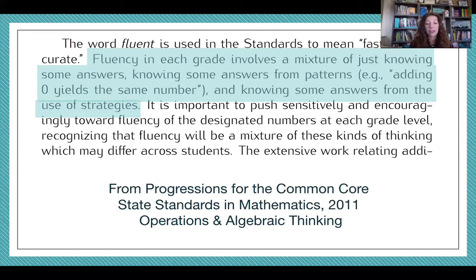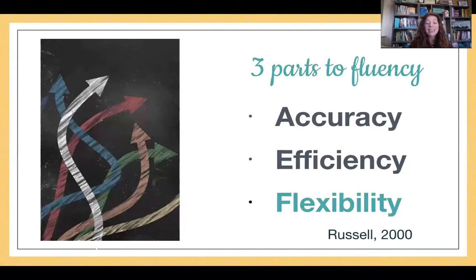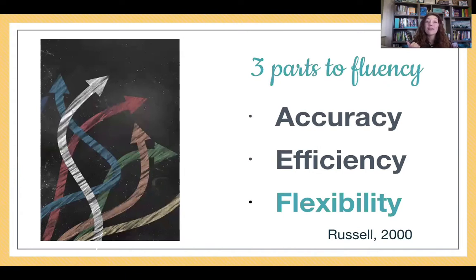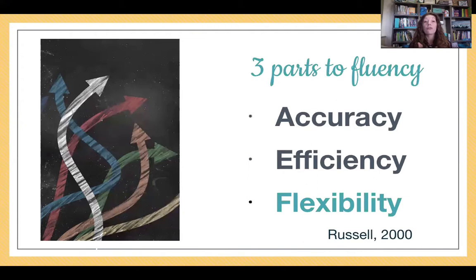Kids need strategies. Another definition I've used a lot comes from three pieces put out by Susan Jo Russell in an article in 2000. She said there are really three parts to determining fluency: kids need accuracy, they need to be fast and efficient, but they also need to be flexible. Way too many of our kids are accurate and efficient but they are not flexible. I'm going to use this definition and come back to it after we talk about touch math to see if it helps kids build all three of these pieces — hint: it doesn't.